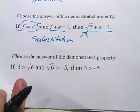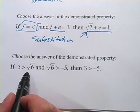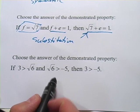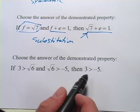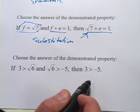All right, and the last one here. This says if 3 is greater than the square root of 6, and the square root of 6 is greater than negative 5, then 3 is greater than negative 5.